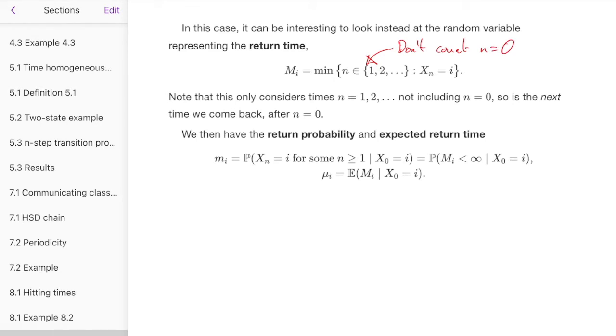So the return probability here is the time that we come back again. It's the probability, sorry, the return probability is the probability we return back at some time n, not n equals 0, the current time, but at some future time, n greater than or equal to 1. And similarly for mu i, the expected return time, is how long does it take for us to come back, not counting the fact that we're here at the moment.